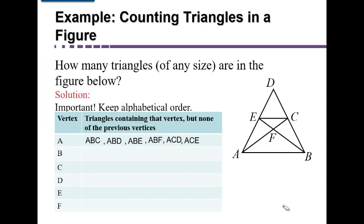Moving on to the A, Ds: we check A, D, E, but that's collinear — just a straight line, not a triangle. How about A, D, F? That's a problem because there's no line segment connecting D and F, so A, D, F will not work. Done with A, Ds. Now the A, Es: A, E, F is a triangle, so we list it. After that, there's nothing beyond F, so we're done with the A, Es. And A, F has no letter after it to form a three-letter sequence, so there's no triangle there. We're done with all of the A's.